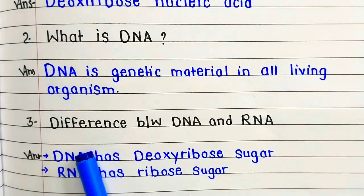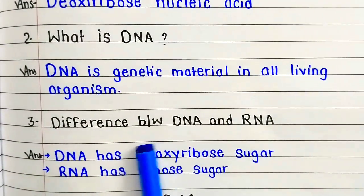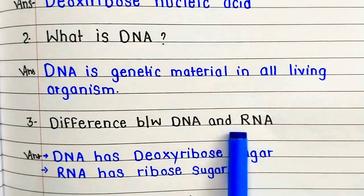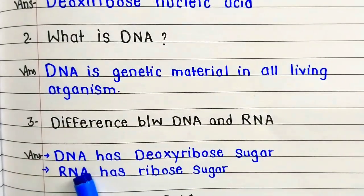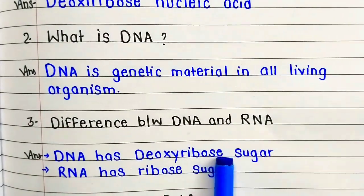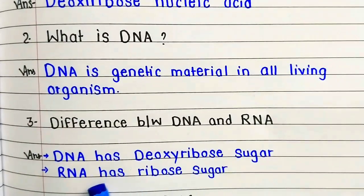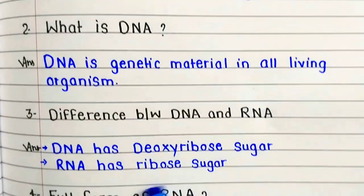Question number 3: Difference between DNA and RNA. DNA has deoxyribose sugar. RNA has ribose sugar.